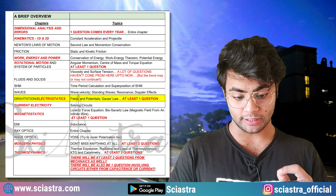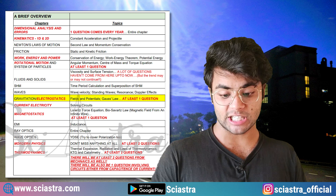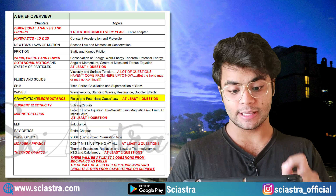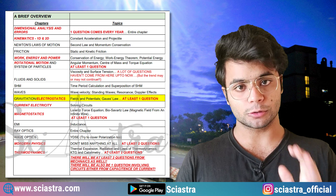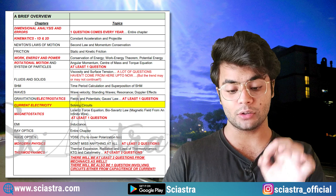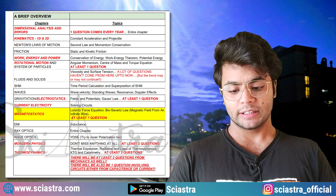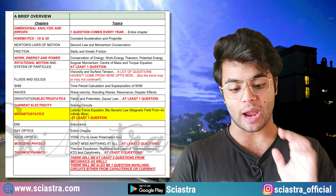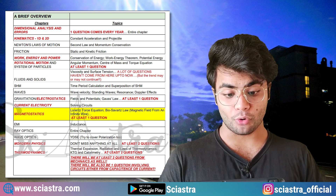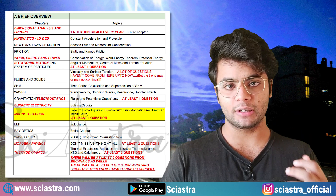Then gravitation or electrostatics — electrostatics seems more important, and at least one question is guaranteed from either of these chapters, based on gravitational or electric fields and potentials. Gauss's law is also a very important topic. Then current electricity, based on solving circuit questions. Then magnetostatics — at least one question almost guaranteed, based on Lorentz force, Biot-Savart's law, and infinite long wire.